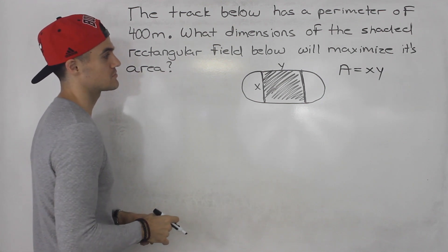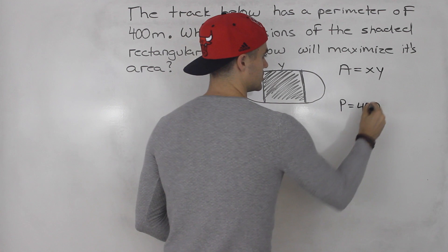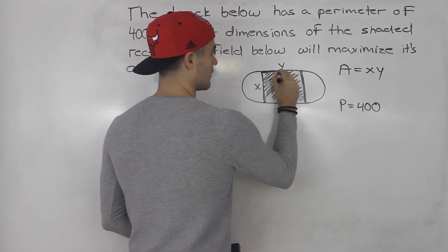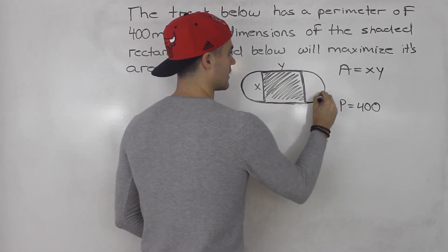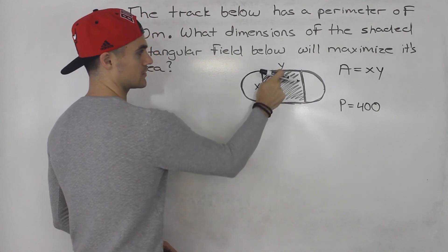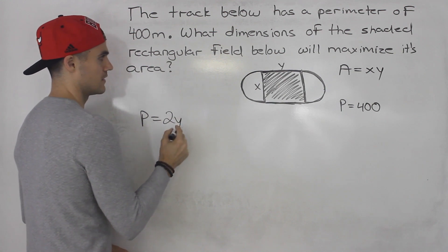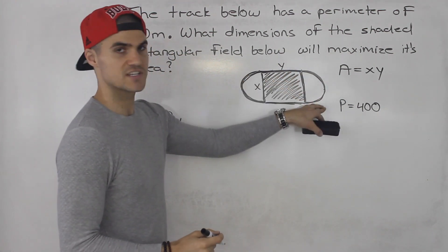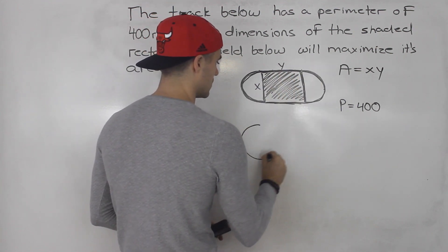So what we can do is we could somehow use this perimeter of 400 meters in order to relate the two variables. Then we could plug them in there, then hopefully have it in terms of one. So we're told the perimeter of this whole track is equal to 400. Notice that there are four parts to this perimeter: this part here, this part here, this part, and then that part there. Notice that these two parts out of the four we already have variables for them — each one is y, so it's basically two of them, so two y.